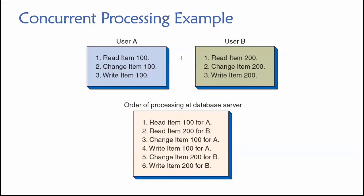At time one, user A is reading the value of item 100 — maybe it's an inventory scenario, checking how many of item 100 are in inventory. At that same time, user B submits a request to read the number of units in inventory for item 200. The database has to respond, and then the users submit their next requests. At time two, user A is going to change the number of units for item 100, and at that same moment, user B submits a request to change the number of units for item 200.